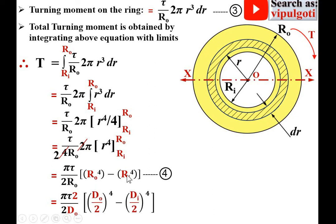With further simplification, the remaining term is πτ/DO·[(DO⁴/16) - (DI⁴/16)].